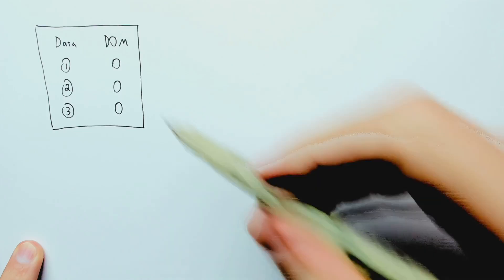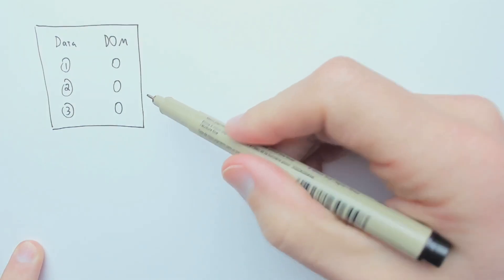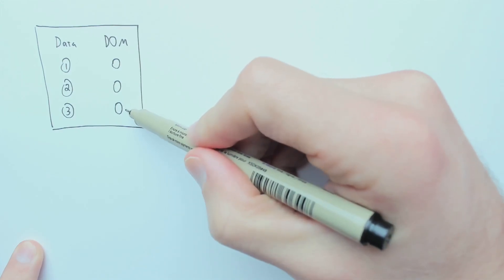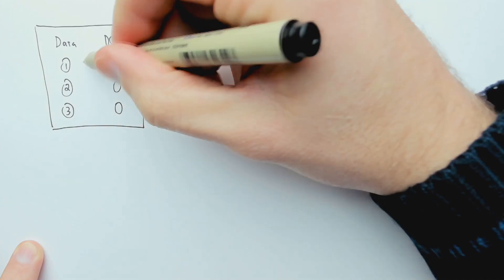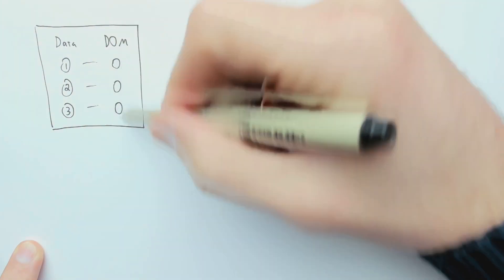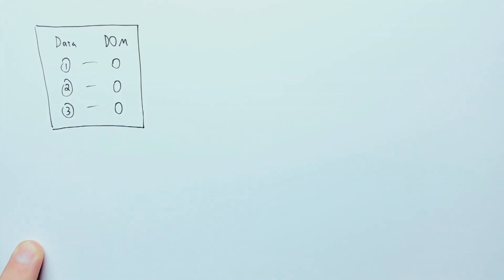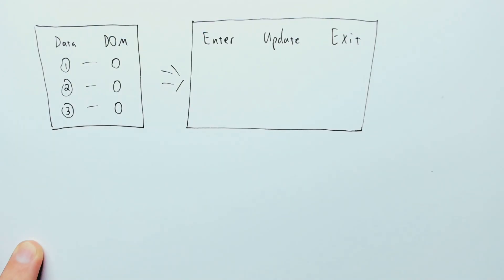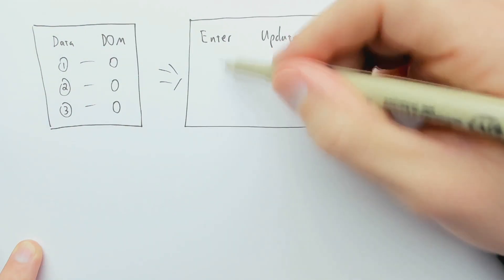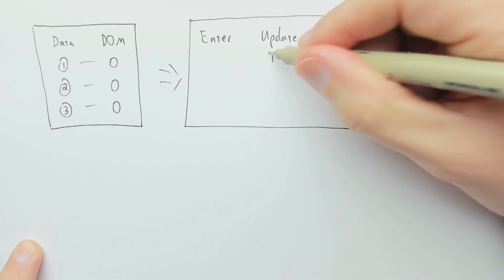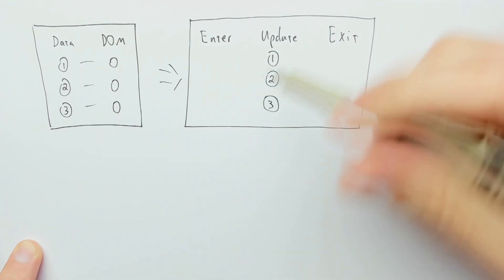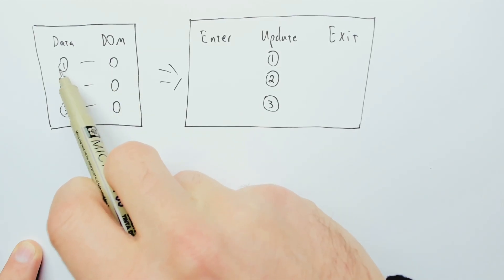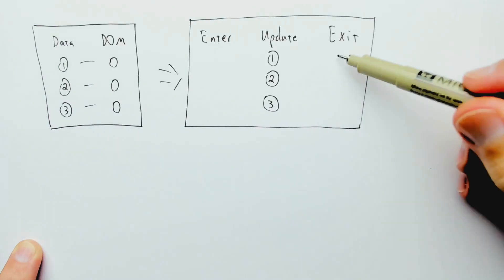Now let's consider the case that that same code already ran once, and it has created these three circles. In this case, there are circles that already correspond to those data elements. So what will we have for enter, update, and exit? Well, in this case, there are no cases here where there's a DOM element missing. So enter will be empty. Update will contain all three. Because for all three, there's an existing DOM element corresponding to the data element. Exit will also be empty.